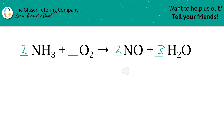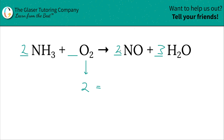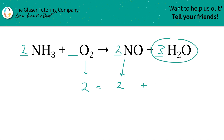The only element left to balance is oxygen. Let's count the total oxygens on the right-hand side. From 2 NO: subscript one, coefficient two — that's two oxygens. From 3 H₂O: three waters, one oxygen each — that's three oxygens. So the right-hand side has five oxygens total. But the left has two — two does not equal five.